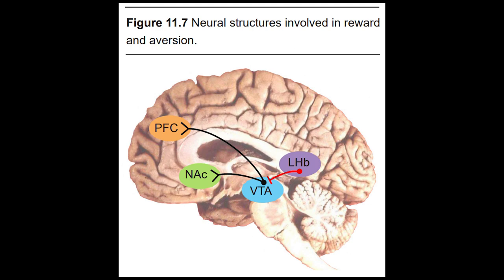Having a sense of reward is a valuable adaptive trait. Consider two similar organisms in the distant geologic past. One gets an internal rewarding sensation whenever it drinks water when thirsty, eats high-caloric content food, or successfully reproduces — making it highly motivated to seek out those rewarding stimuli. The other creature does not experience pleasure from its actions, resulting in little motivation to seek out calories or to reproduce. It stands to reason that the first of these two creatures has an evolutionary advantage for survival.